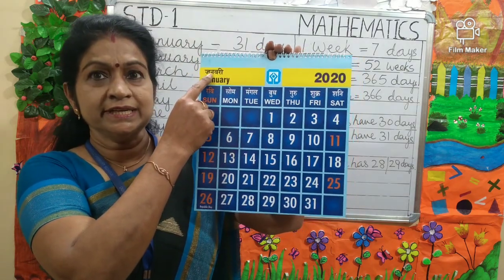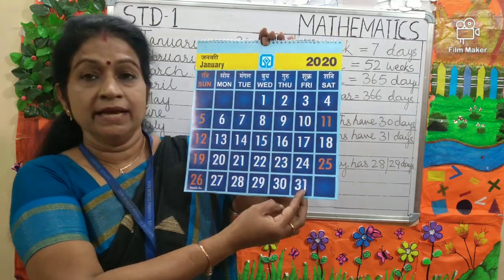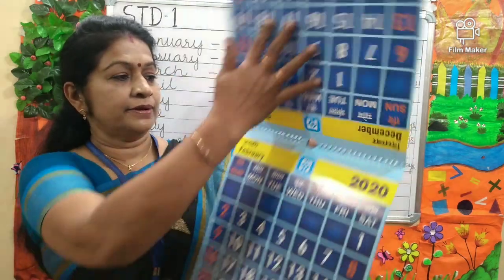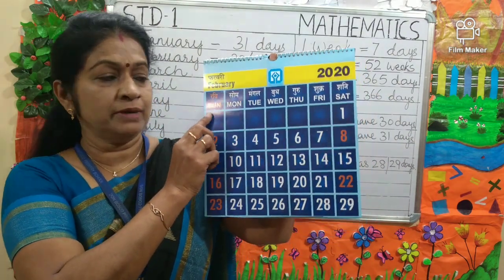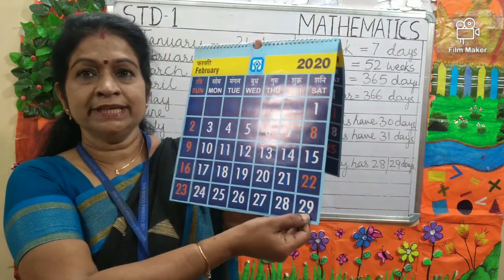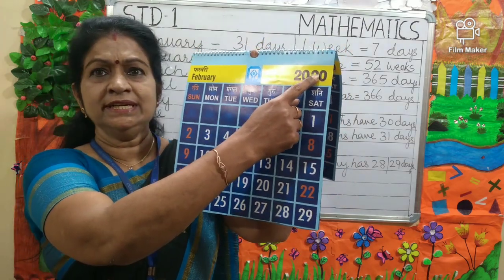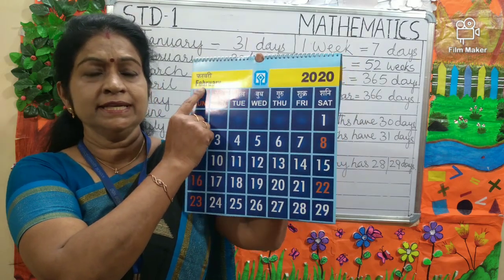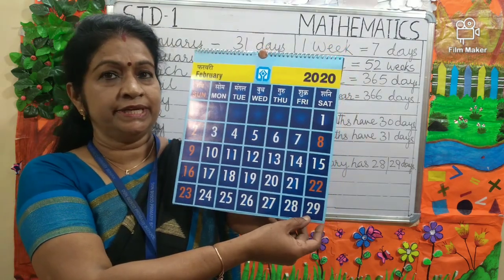This month January has how many days? It has 31 days. Next is February. February is the second month of the year and it has 29 days because 2020 is a leap year. In a leap year, February has 29 days. Otherwise it has only 28 days.